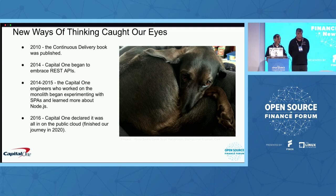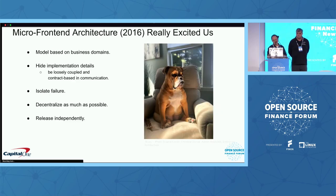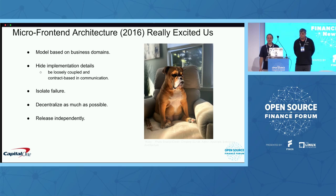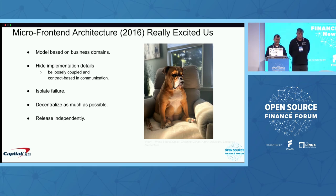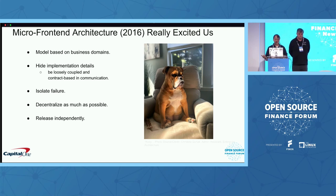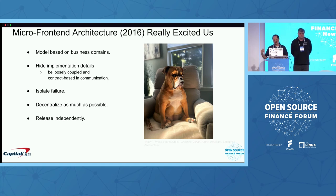Then in 2016, we moved beyond on-prem infrastructure and were going to go to the cloud. But the thing that really impacted our way of thinking was we noticed in the ecosystem this idea that you could begin to decompose front-end applications — you no longer had to do single-page applications. On MartinFowler.com, Cam Jackson published an article about micro front-end architecture.